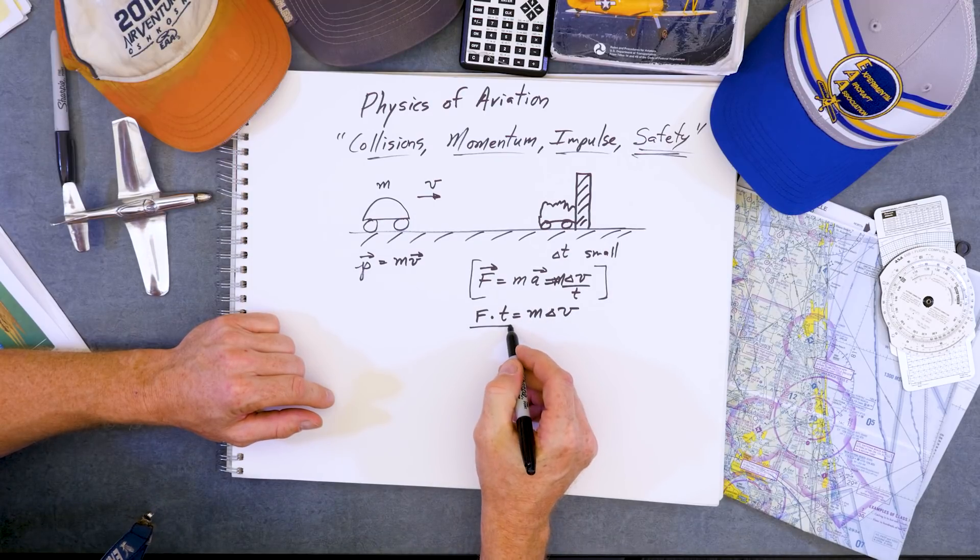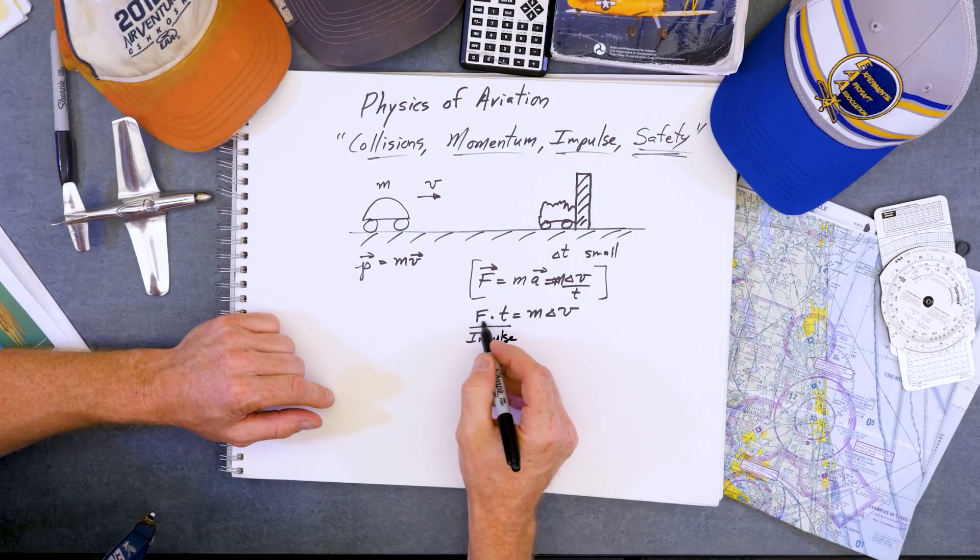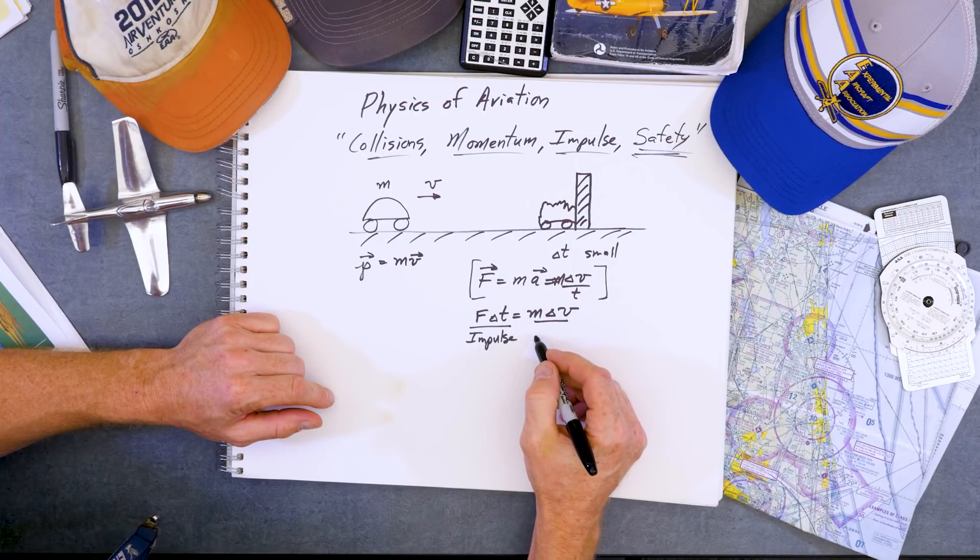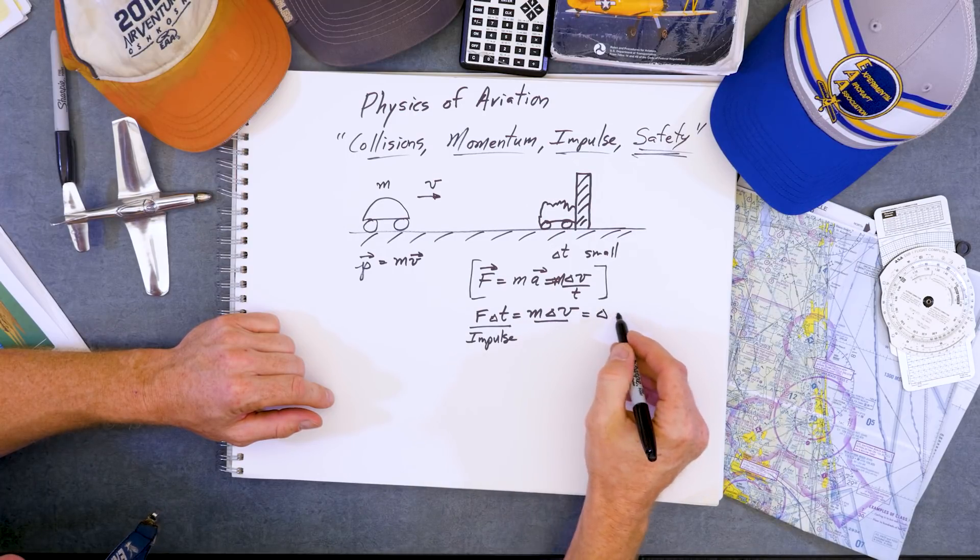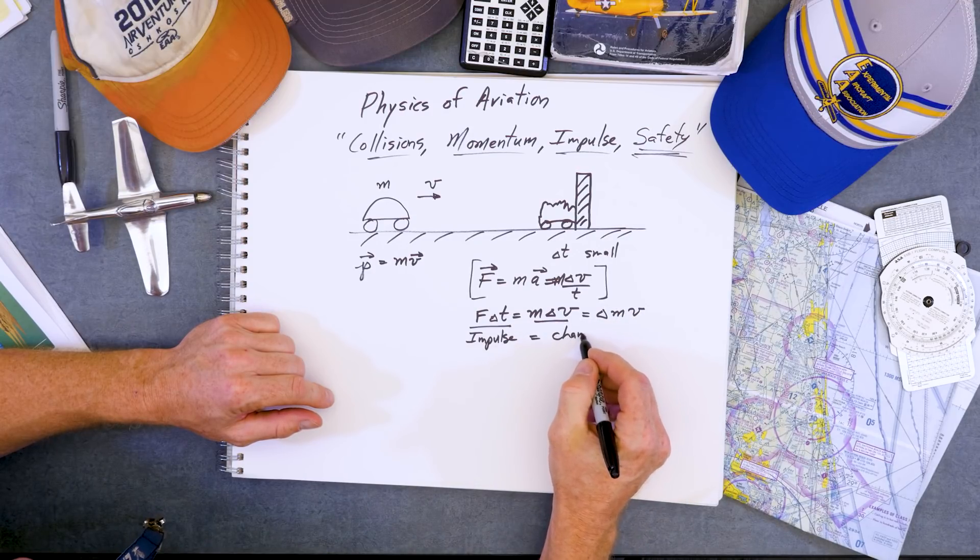Aha, this quantity has a new name in physics called impulse. The force times the time interval. And this quantity is our momentum. And since mass is a constant, we can make this delta MV. And we have impulse equals change in momentum.